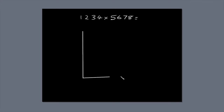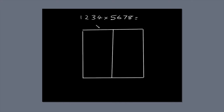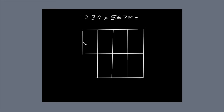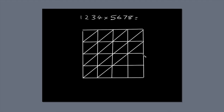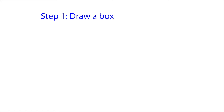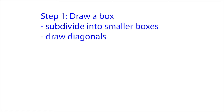The first thing you need to do is draw a box. Subdivide the box into four columns, because the first number, 1,234, has four digits. You also have to subdivide the box into four rows, because 5,678 has four digits. You end up with a box subdivided into 16 smaller boxes. Next, draw a diagonal line through each of the 16 small boxes. You might find you can draw a diagonal through more than one of the smaller boxes at a time. That's step one: draw a box, subdivide it into smaller boxes, and draw diagonals through them.